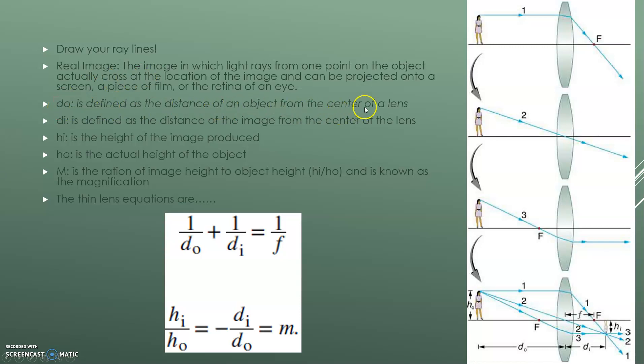DO is defined as the distance of an object from the center of a lens. So DO in this case would be this right here, the actual distance of her from the lens, the center of the lens. DI is defined as the distance of the image from the center of the lens. So the image, not her herself, but the image over here, her image from the center of the lens. HI is the height of the image produced. So we have this little image here. The image is the height of the image there, HI. HO is the actual height of the object. So her right here, pretty obvious, HO.